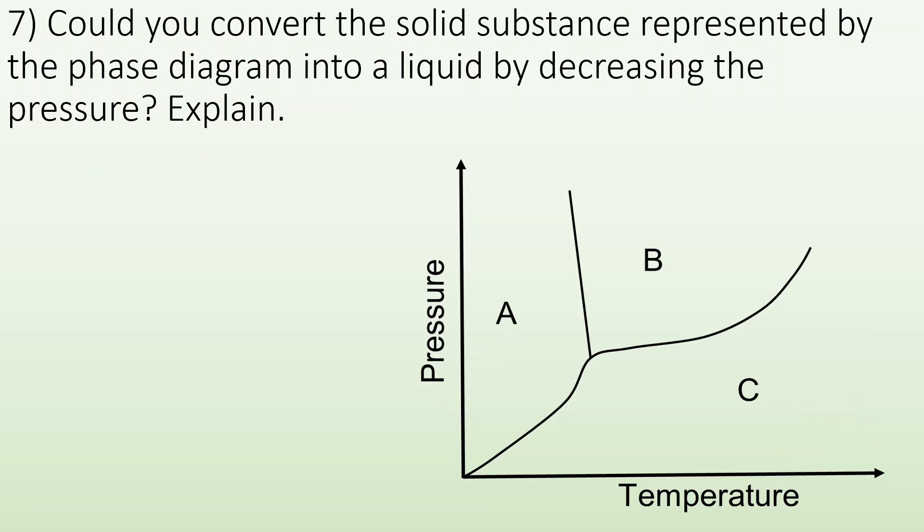Seven: could you convert a solid substance represented by the phase diagram into a liquid by decreasing the pressure? So we're starting in the solid, we're in this region, and we're decreasing the pressure. Short answer is going to be no. You can't, because it's left leaning.